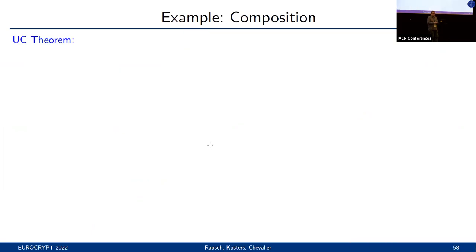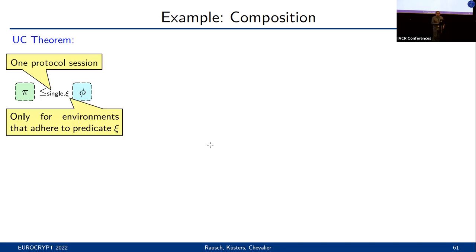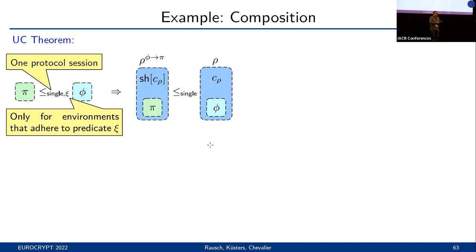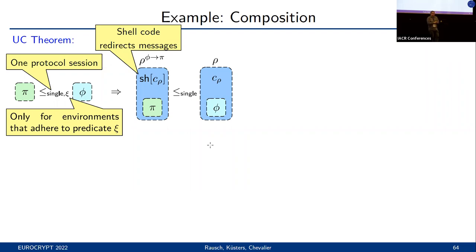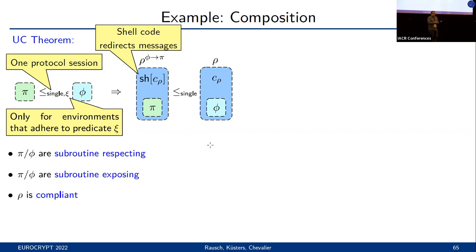Let me give one final example: composition. The UC theorem considers the setting where we have already shown that some protocol pi realizes some protocol phi. The analysis is for a single protocol session and a restricted class of environments that adhere to some predicate G. We also consider a protocol rho that uses potentially several subroutine sessions of phi, and the theorem then implies that if we consider the composed protocol that rather uses pi as a subroutine, this composed protocol realizes the original protocol rho. To express this composed protocol, the UC model introduces some shell code that internally redirects messages to a different subroutine. The subroutines have to be shown to be subroutine-respecting and subroutine-exposing, and the combined protocol rho must be shown to be compliant.